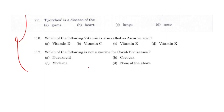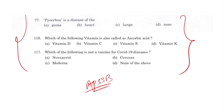Here are a few questions which I have taken from APSSB — the Arunachal Pradesh Staff Selection Board examination. I have taken three example questions to show how questions come from this section. The first: Pyorrhea is a disease of the — gums, heart, lungs, or nose? Pyorrhea is a disease caused in the gums.